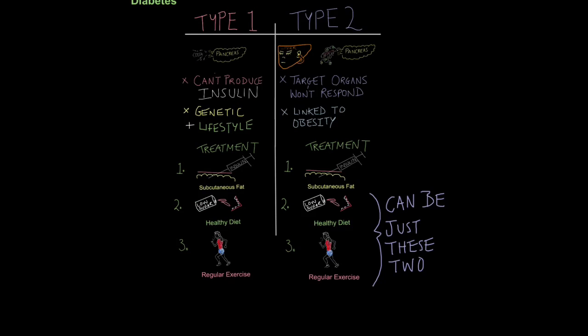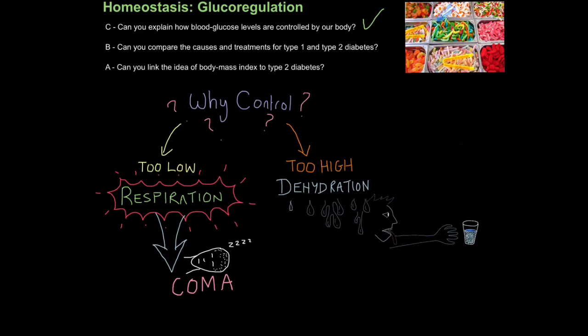So just another overview. Remember, type 1, the pancreas cannot produce insulin. This could be linked to genetic factors, but also lifestyle factors. The treatment is injecting insulin into your subcutaneous fat and basically controlling your sugar intake and also having a healthier, active lifestyle. Type 2 diabetes, the pancreas does produce insulin, but the organs have stopped responding to it. So target organs won't respond. It's been linked heavily to obesity. Type 2 diabetes can be cured. You can do this by controlling your sugar intake, having a healthy diet and regular exercise, though some people may want to supplement that with insulin intake. So that is how you compare the causes and treatments for type 1 and type 2 diabetes.